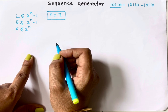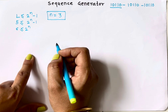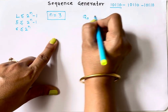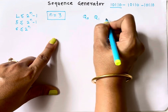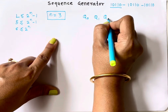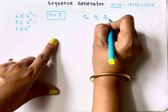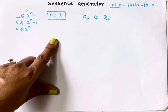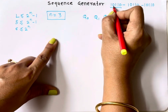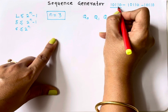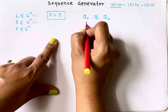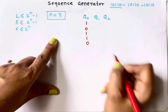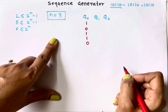With 3 flip-flops, we will have 3 outputs: Q0, Q1, and Q2. The expected output sequence is 1, 0, 1, 1, 0 — repeating as 1, 0, 1, 1, 0. This is the expected output we need to generate.